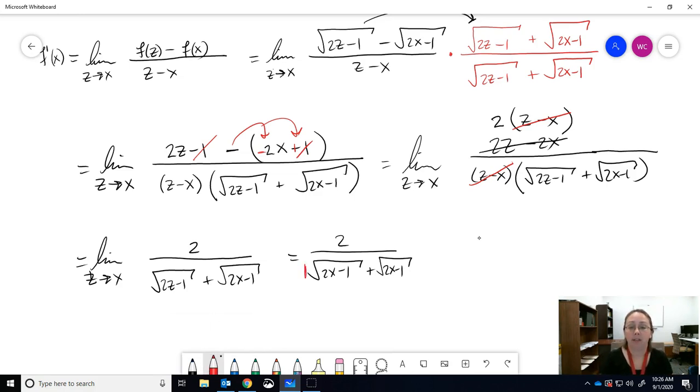The square roots, how do we add them? You add the numbers in front. So 1 plus 1 makes 2. So 2 over 2 square root of 2X minus 1. The 2's cancel out. What's left on top, though, if you cancel everything? You need a placeholder of 1. So 1 over the square root of 2X minus 1.